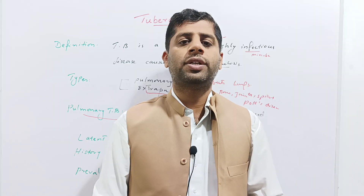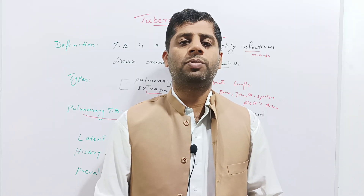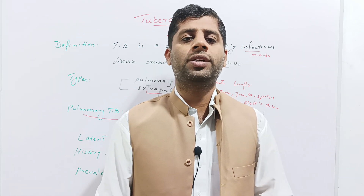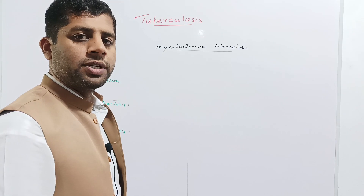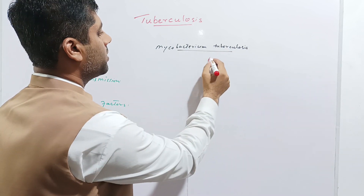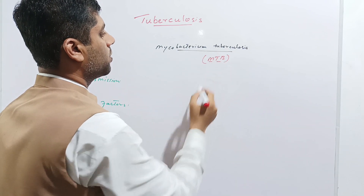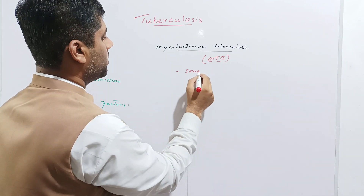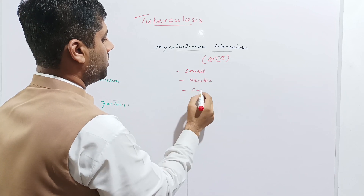Tuberculosis is an antique disease found in ancient times; however, it was first reported by Richard Martin in 1689. This disease is highly prevalent in Asian and African countries. Now, regarding the etiology: TB is a bacterial disease caused by Mycobacterium tuberculosis, abbreviated as MTB.